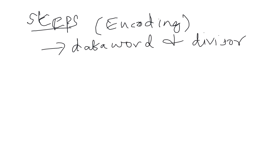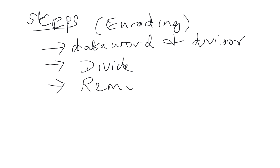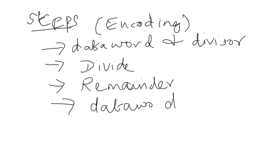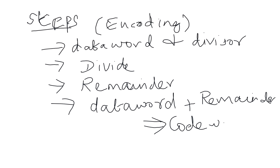If both are given in polynomial form, no need to convert — proceed accordingly. Otherwise, convert the given data word and divisor to polynomial. Then divide the data word by the divisor. You will get a remainder. That remainder will be added with your data word. So data word plus remainder gives you a code word. This is your encoding process.